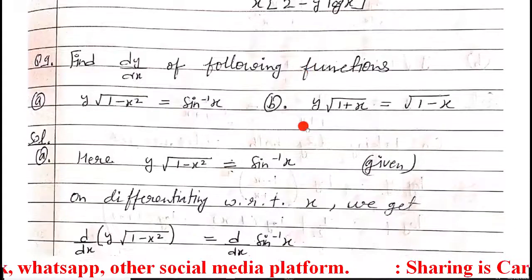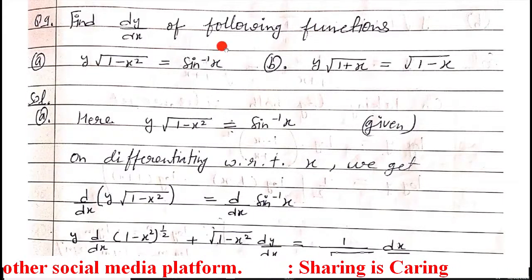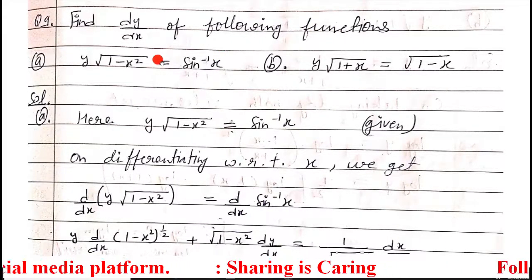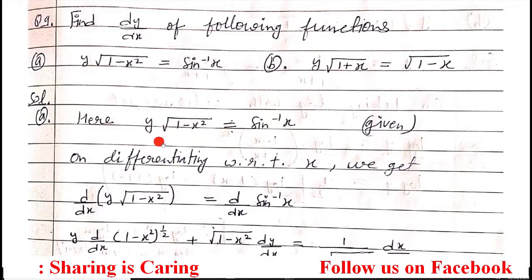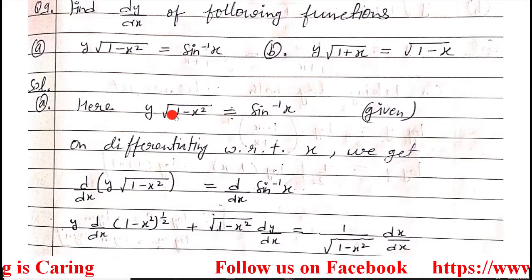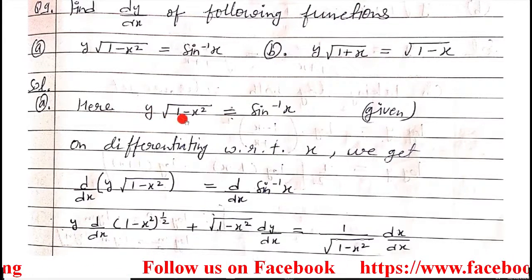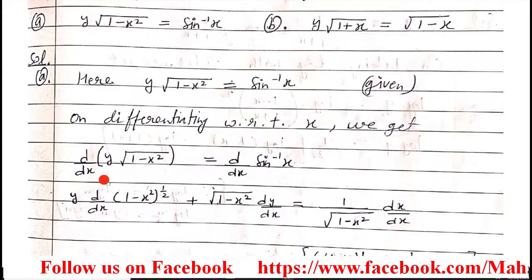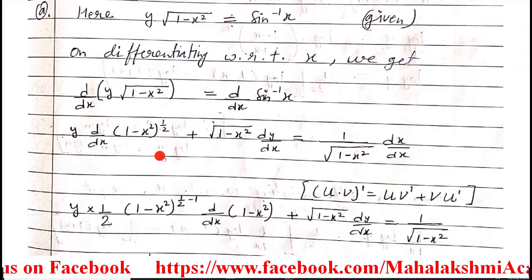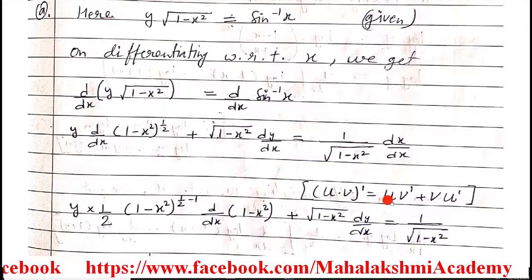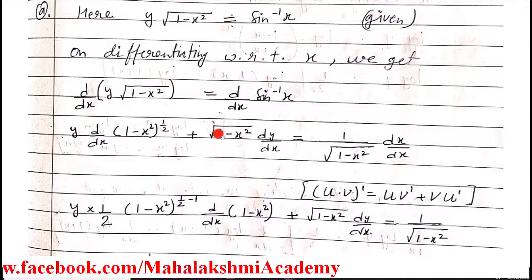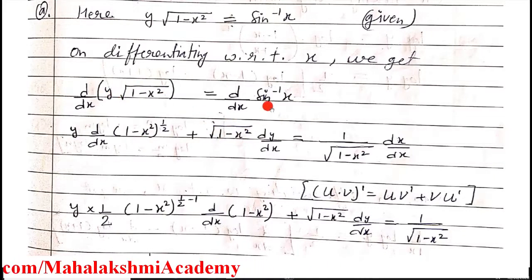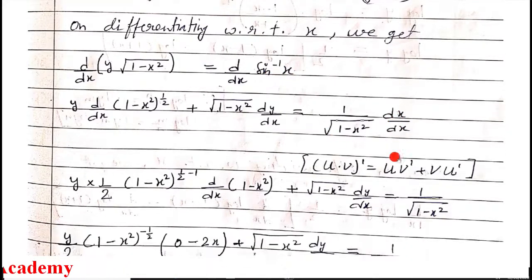Now we start question number 9, where again we find dy/dx. For part a, we differentiate directly using the u·v (product rule) formula, since sine inverse differentiation is known. Differentiating using the product rule: first term as-is times differentiation of the second, plus second term as-is times differentiation of the first. The differentiation of sin⁻¹x gives the known formula, and chain rule applies.